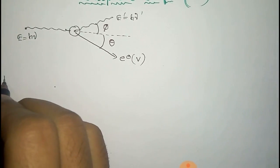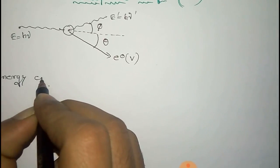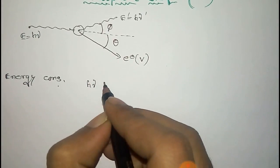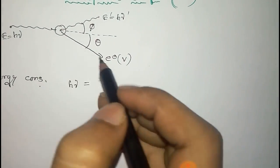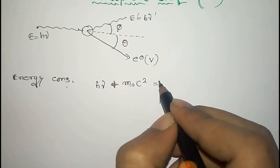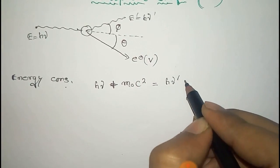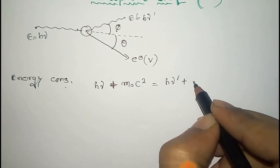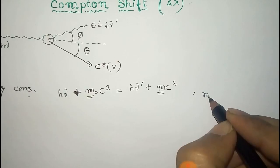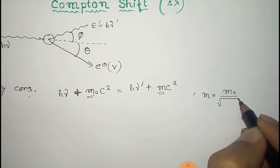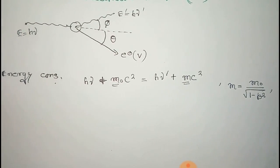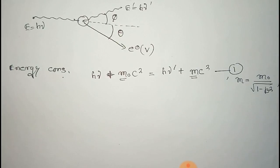To derive the Compton shift, we first apply energy conservation. The energy of the photon before collision is h-nu, plus the energy of the electron at rest which is M-naught C-squared, since the electron is at rest with rest mass M-naught. After collision, the energy is h-nu-prime plus the energy of the electron M C-squared, where M is the moving mass. The relation between moving mass and rest mass is M equals M-naught divided by the square root of 1 minus beta-squared, where beta equals V over C. This is equation 1.